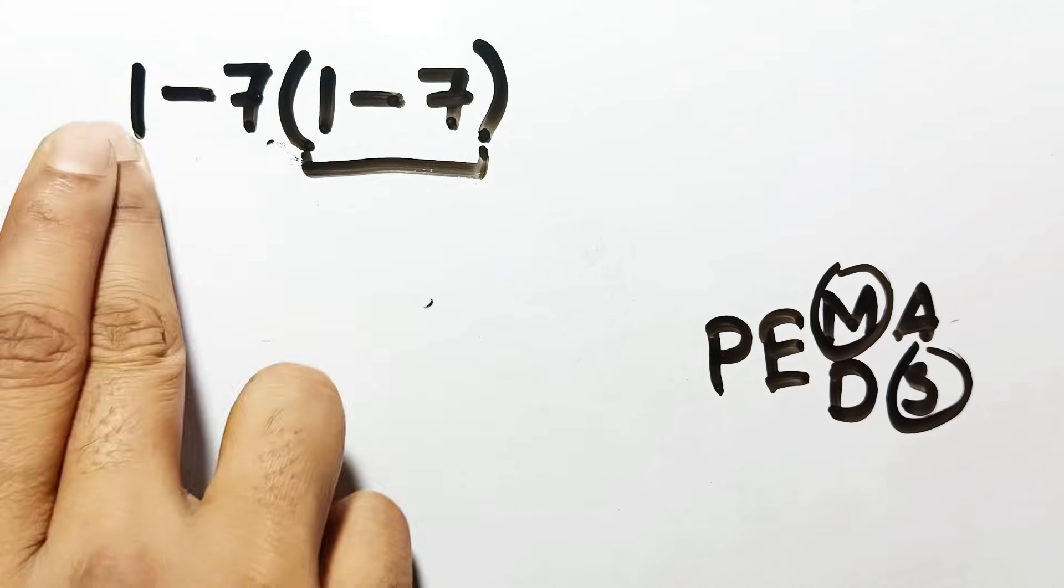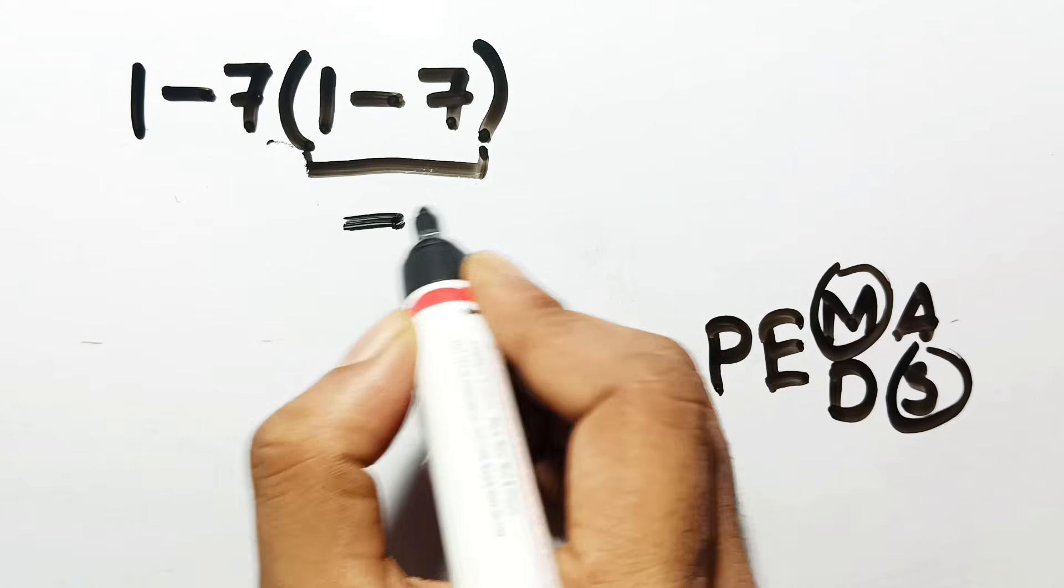We must start with the group inside the parentheses. 1 minus 7 is negative 6.